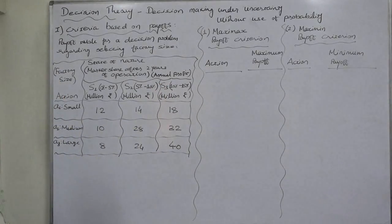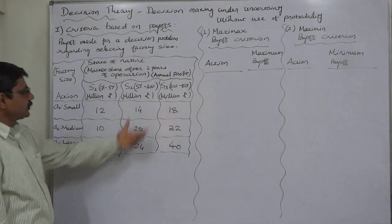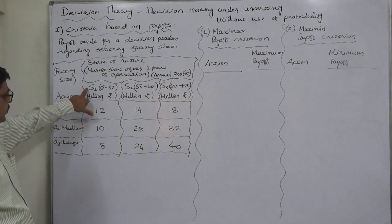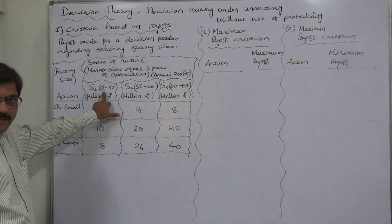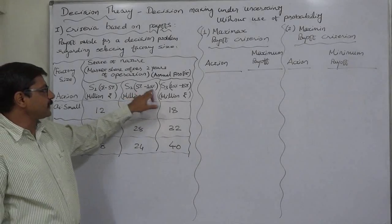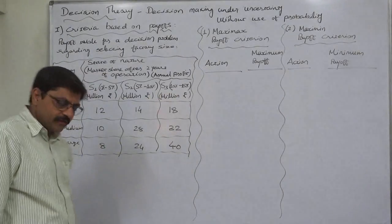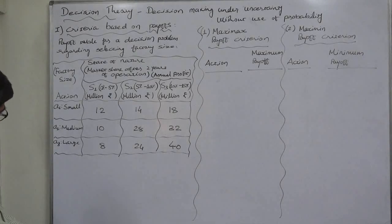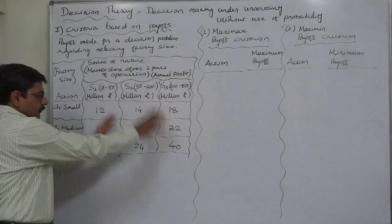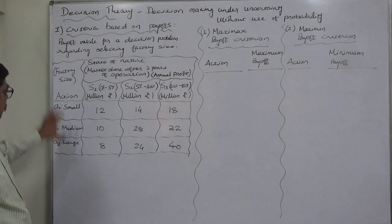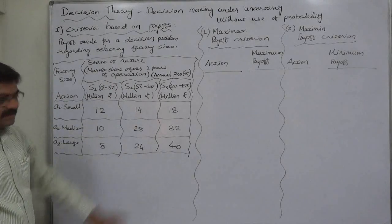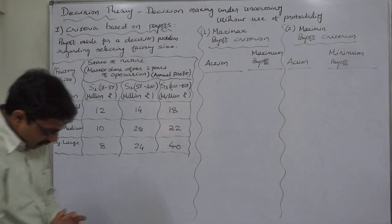The three possible states of nature are: first S1 is 0% to 5% market share, second is 5% to 10% market share, and third is 10% to 15% market share. These are the possible outcomes under the combinations of various actions as well as the states of nature.